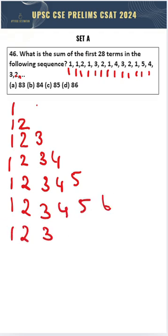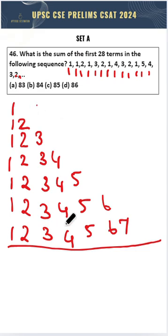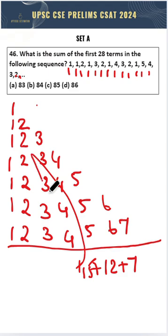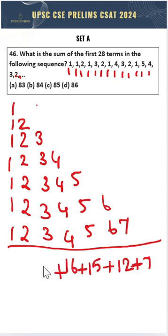Now you can count and see if you have reached 28 terms. This will be the place where we reach 28 terms. So now all you have to do is add these up, which means 7 plus 12 plus 15 plus 16 plus 15